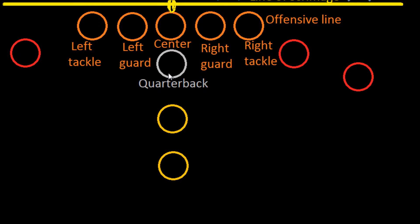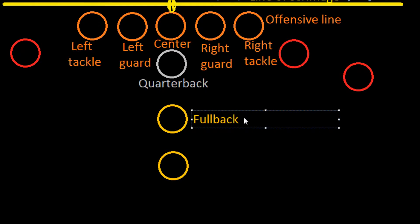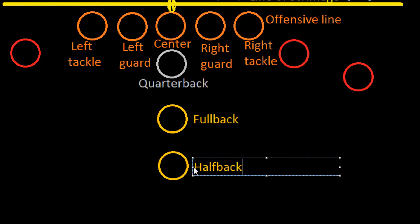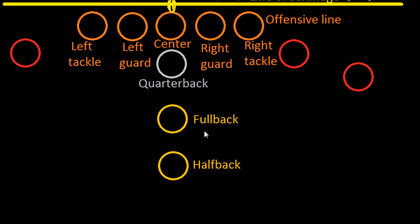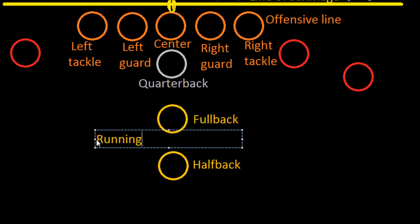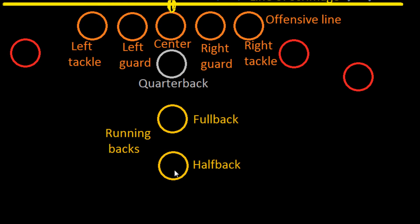Right behind the offensive line is the quarterback. The center snaps the ball back to the quarterback, and then the quarterback has a decision — he can either pass the ball or hand it off. For a handoff, he would turn to one of the guys behind him. Back there we have two somewhat misnamed guys: the fullback and the halfback. You might think the fullback would be further back, but that's not the case. Both are considered running backs, and if the quarterback hands off, it will typically be to the halfback, who will run with the ball.